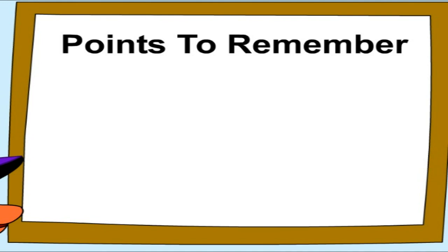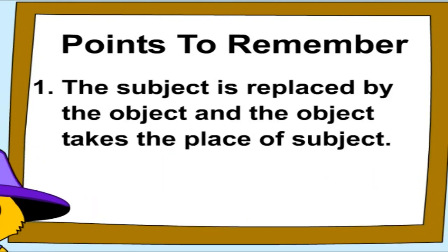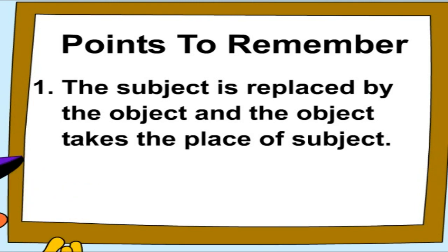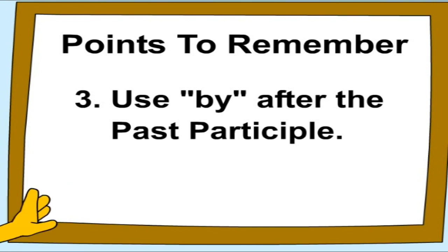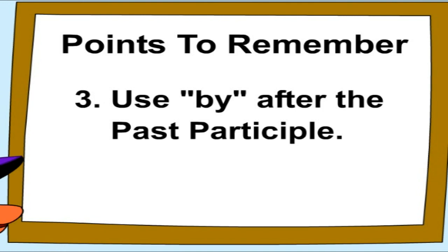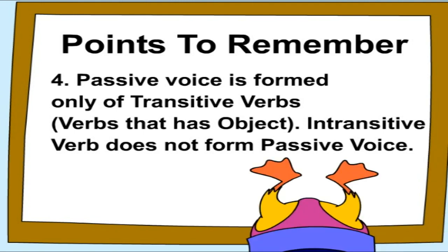Points to remember: one, the subject is replaced by the object and the object takes the place of the subject. Two, use the third form of the verb — past participle. Three, use 'by' after the past participle. Four, passive voice is formed only with transitive verbs — verbs that have an object.